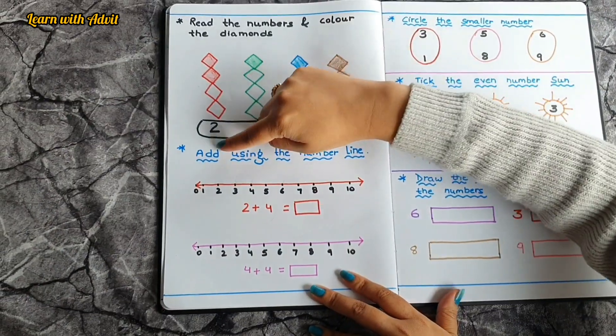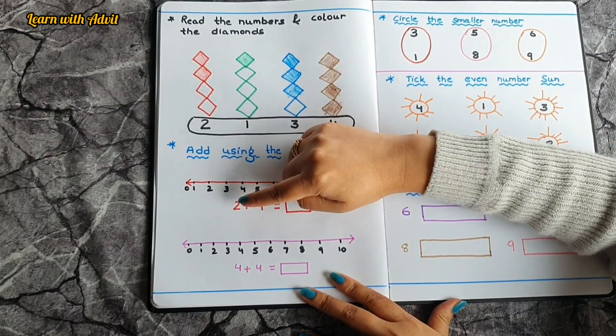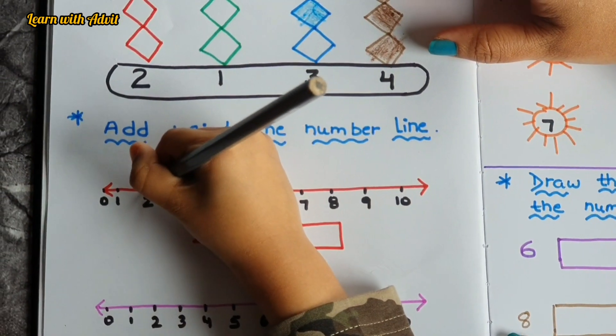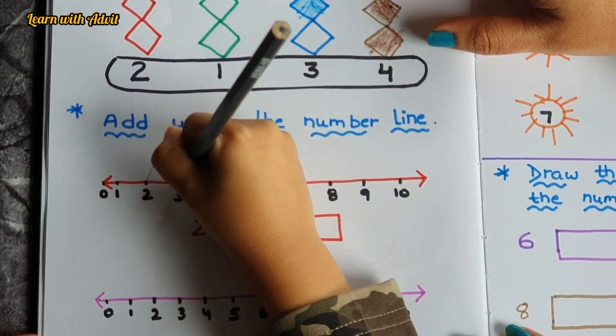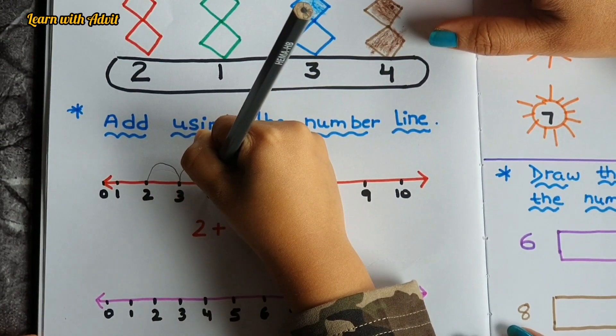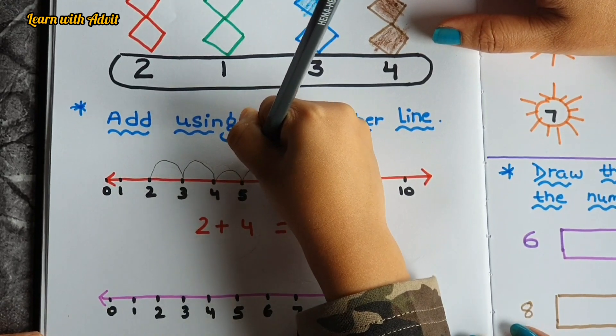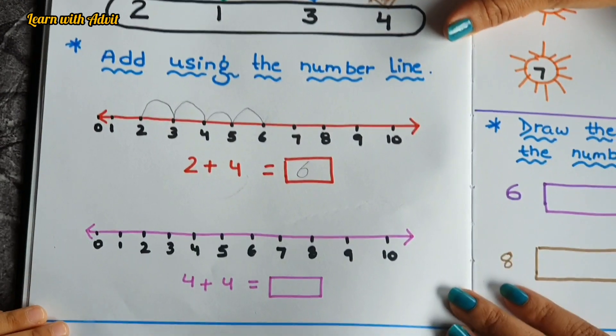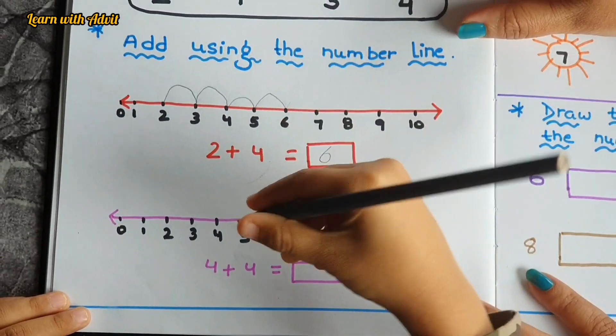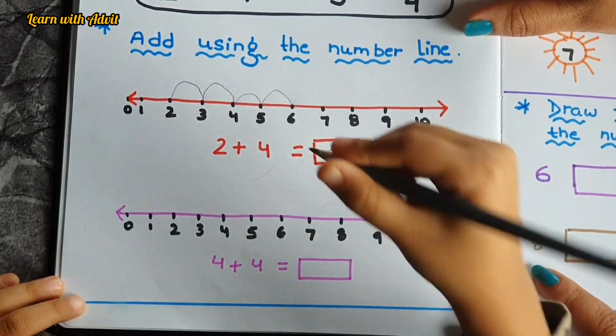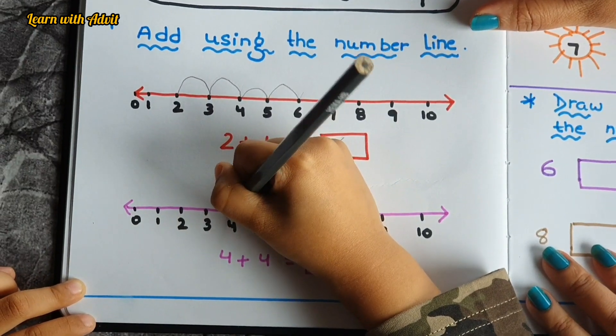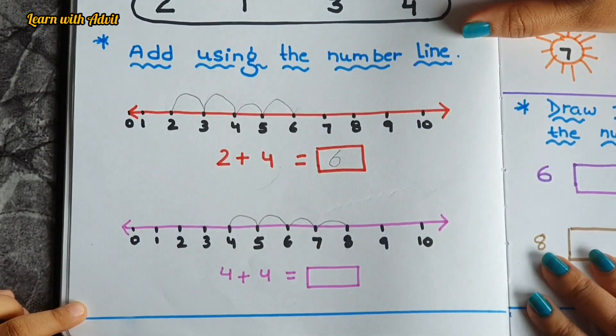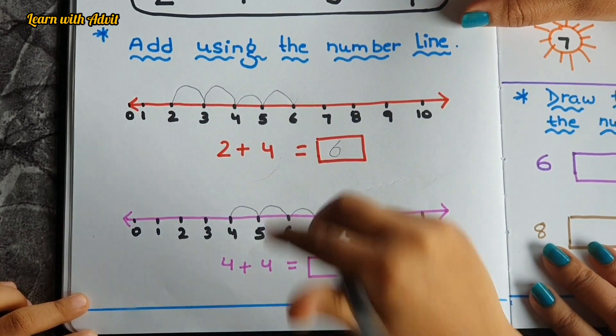Here what you have to do is add using the number line. You have to add 2 plus 4 and 4 plus 4 by using number line. Come on, 2. Okay, 1, yes, and 2, yes, and 3, yes, one more, 4. So 2 plus 4 is 6. Very good. So now you have to do 4 plus 4. So you have to jump forward from 4. Where is 4? Yes. 1, 2, 3, 4. Yes. So 4 plus 4 is 8. Very good.